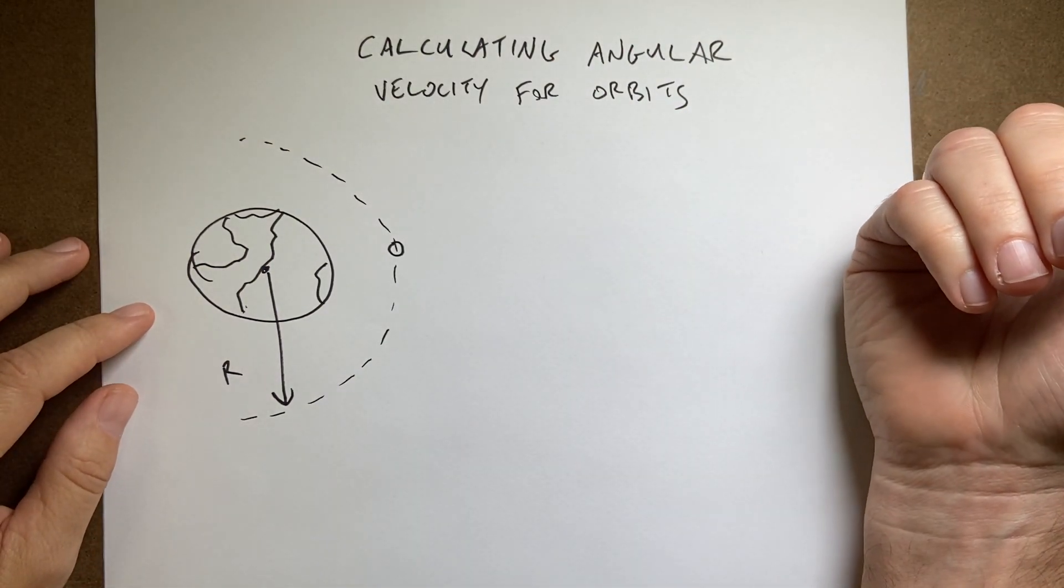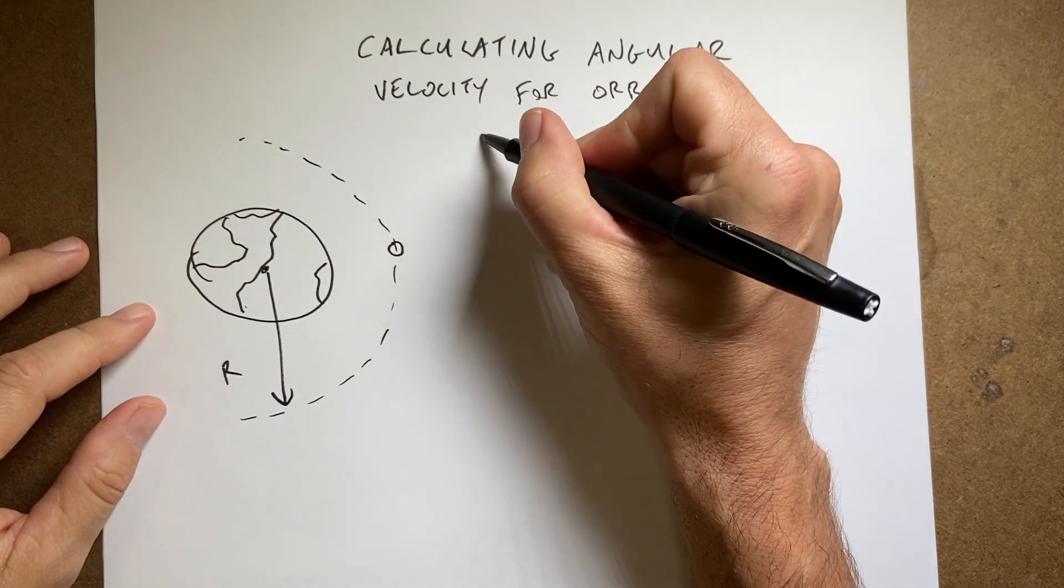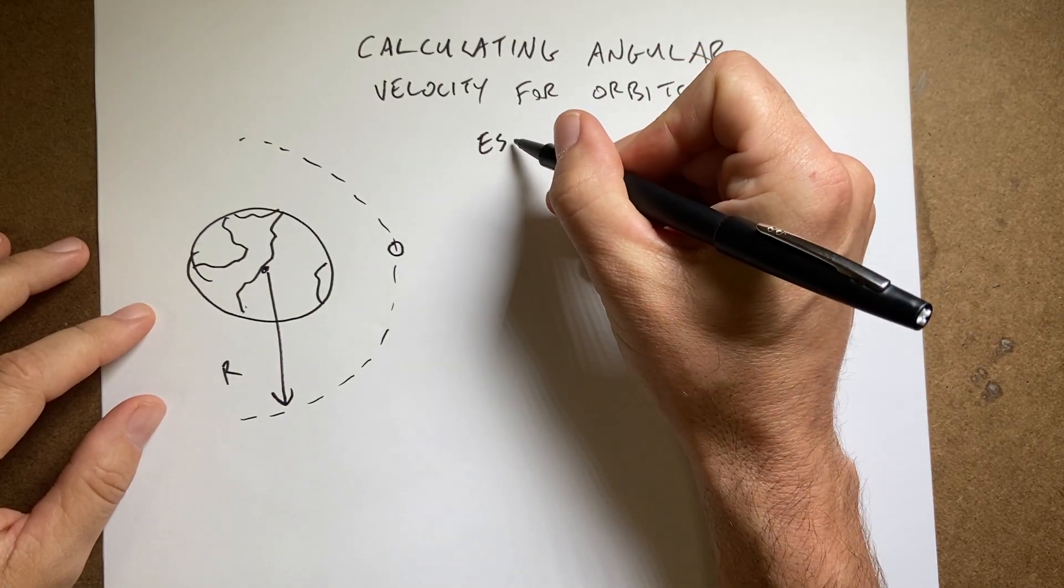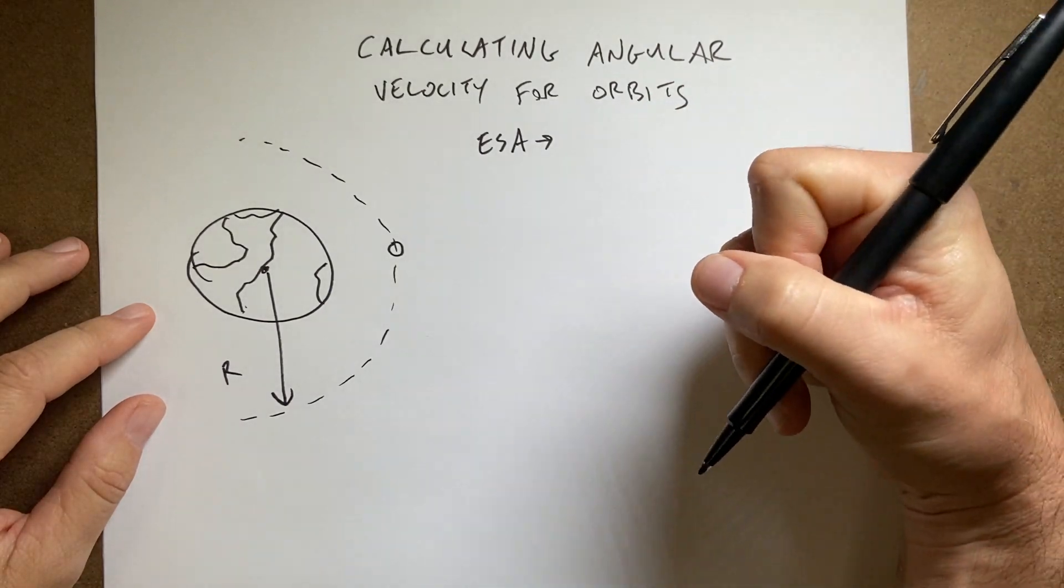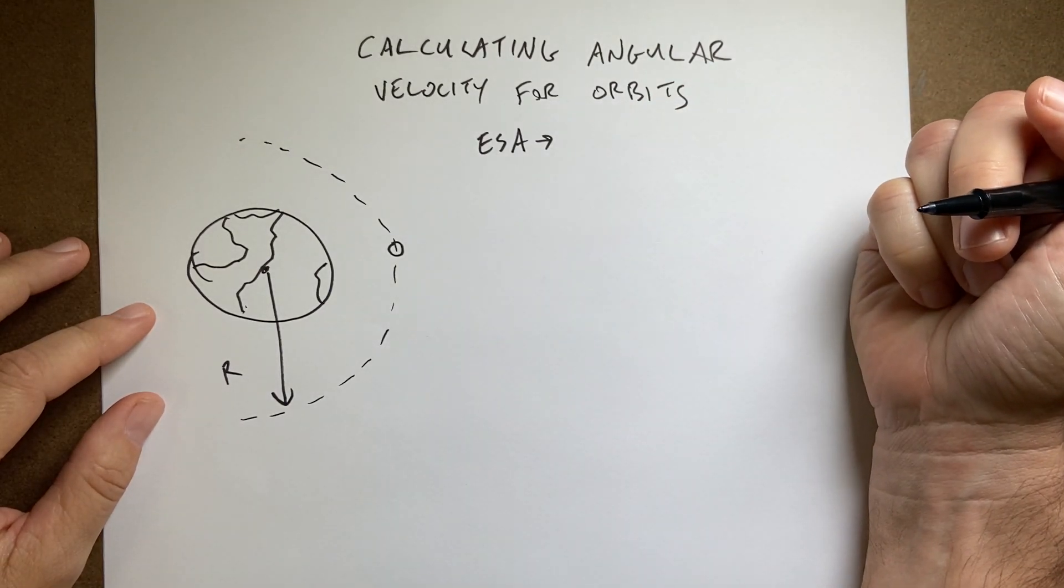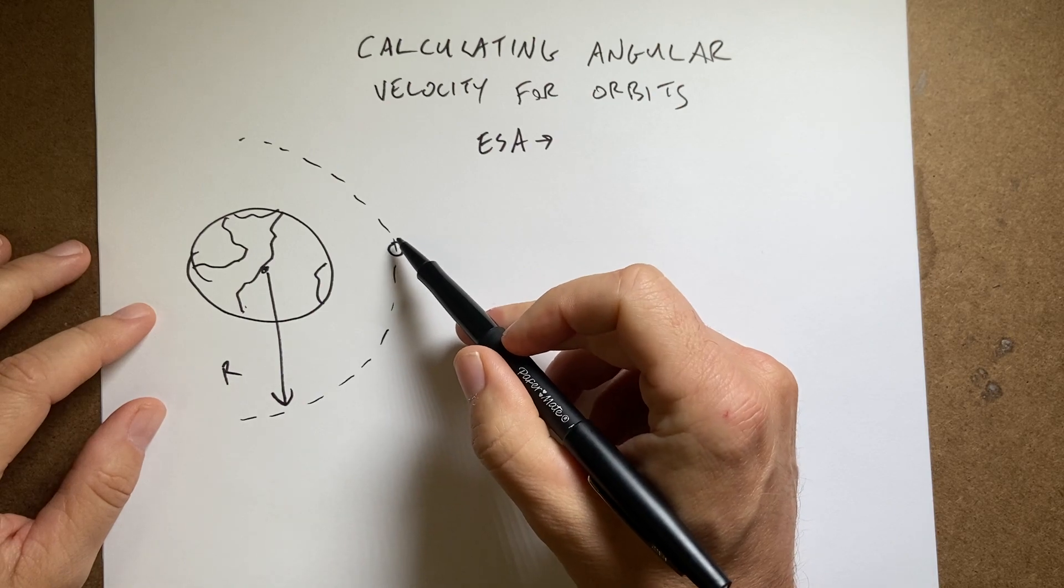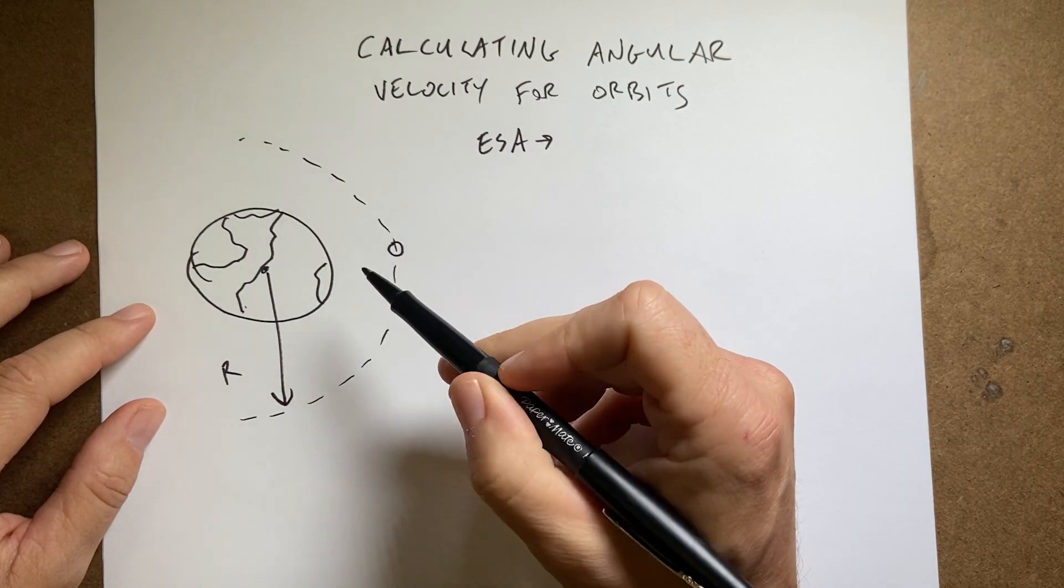Okay, this is actually an answer to a question on my blog post at the European Space Agency blog. I don't remember where it was, but I'll link to the post below. And the question was, how do you get the angular velocity for an object orbiting around the Earth?